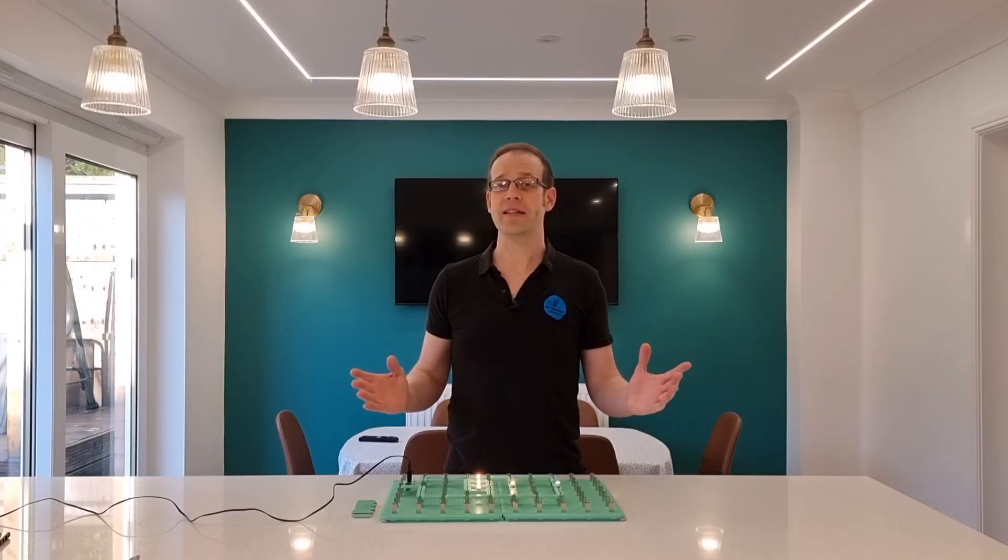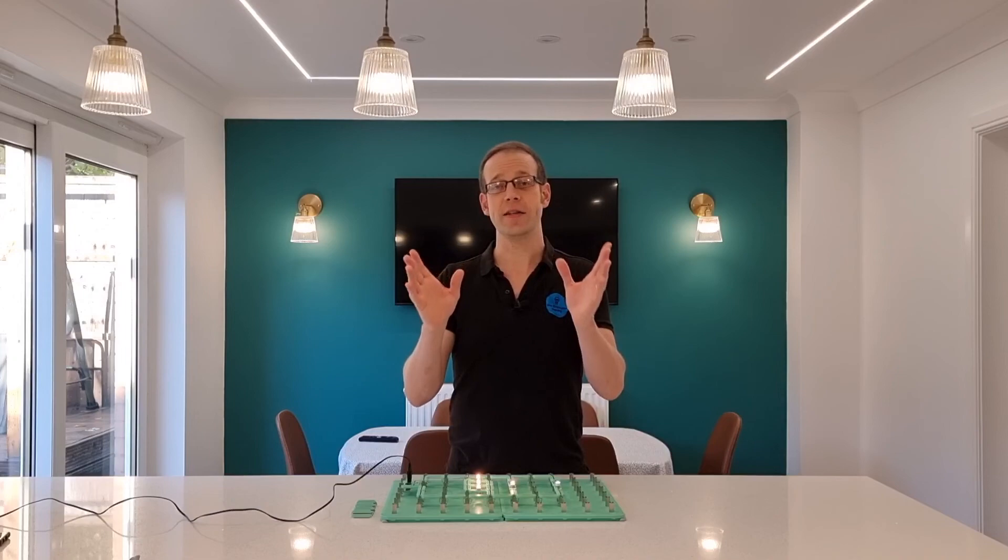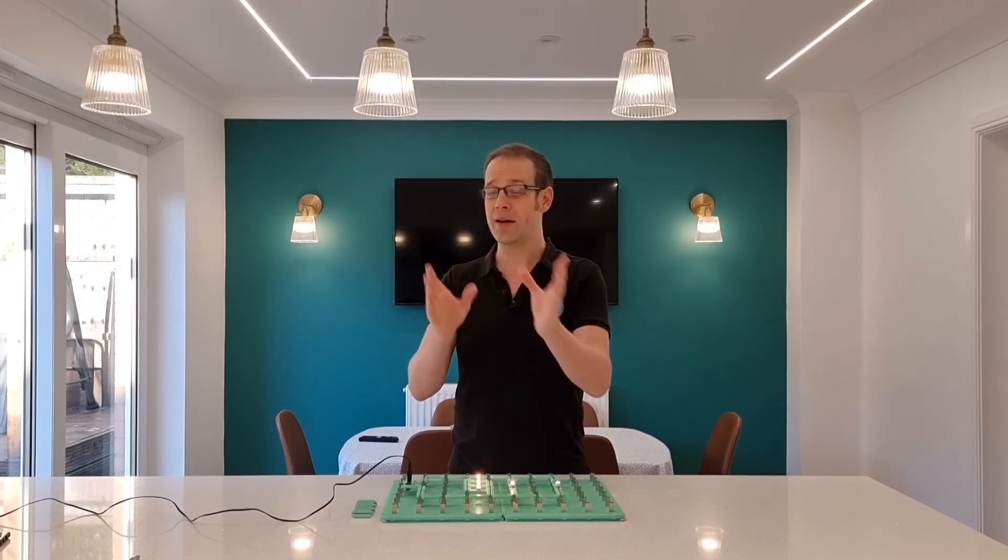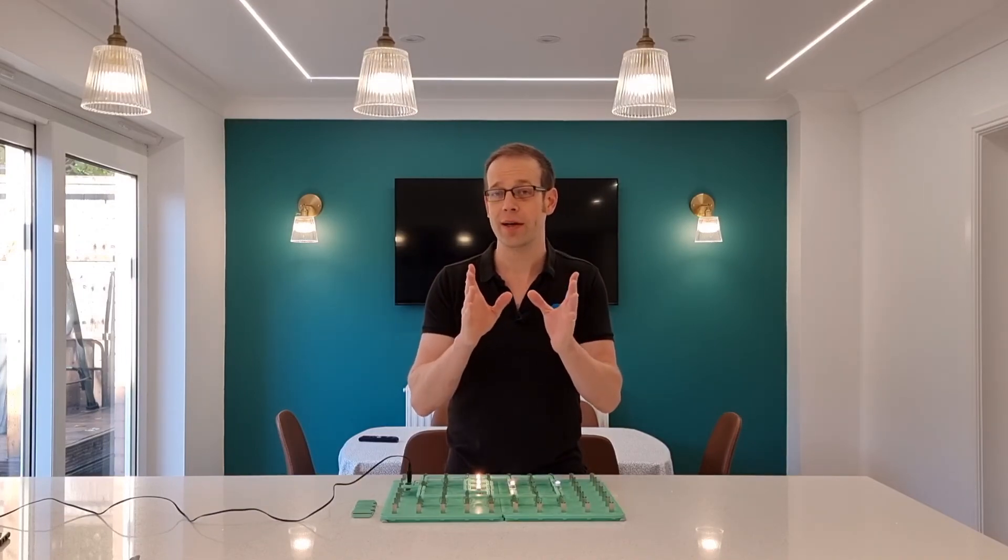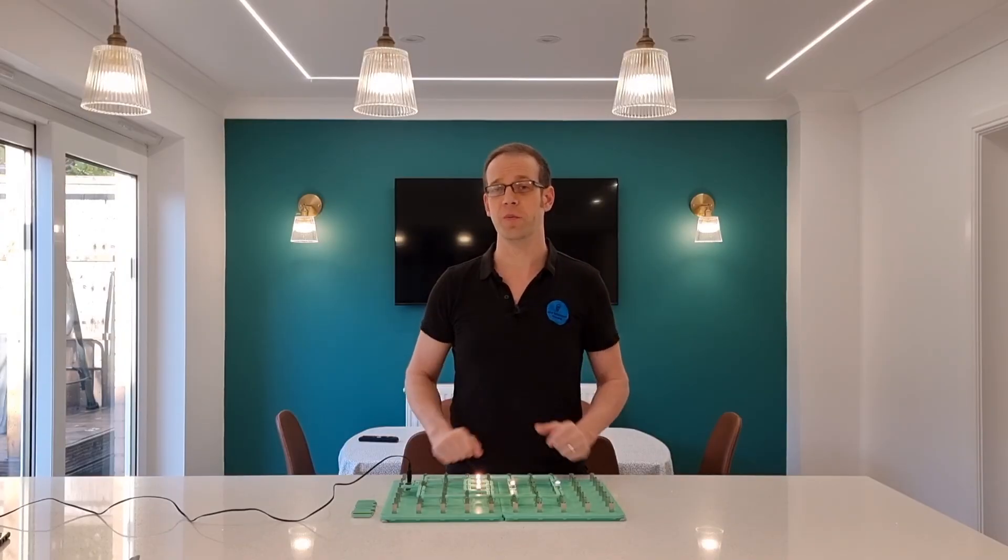So there we go, we've answered that question. Where you've got more than one light fitting controlled by one switch, those fittings are still wired in parallel with each other and with the supply, however they're wired in series with the switch which is how one switch can control more than one light.